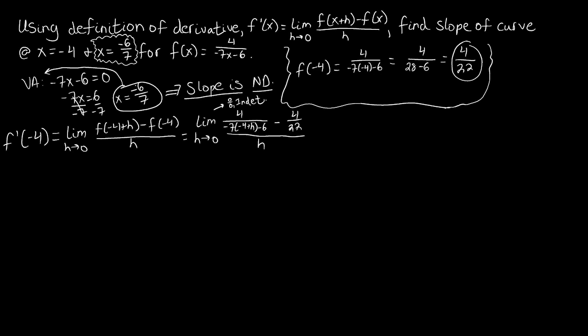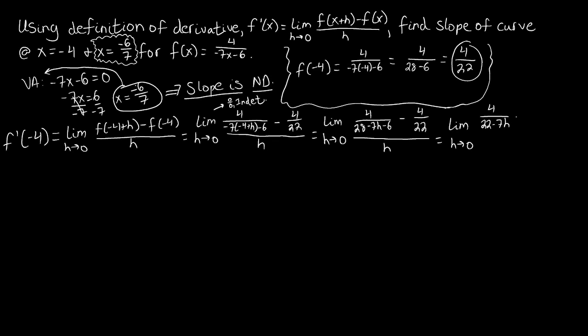After reaching an indeterminate form, we look for ways to manipulate the expression. First, we distribute negative 7 into the parentheses in the denominator of the first fraction, giving us 4 over 28 minus 7h minus 6, minus 4 over 22, all over h. Combining 28 and negative 6 gives us 4 over 22 minus 7h, minus 4 over 22, all over h.